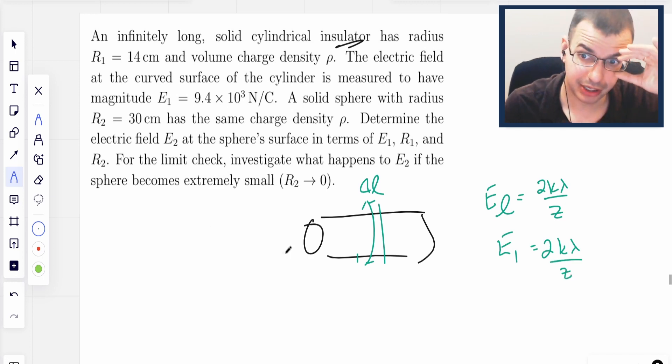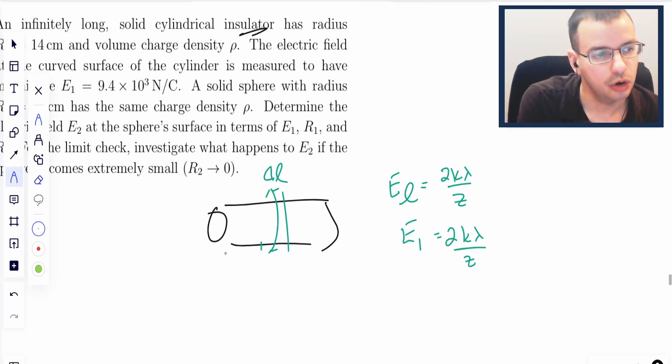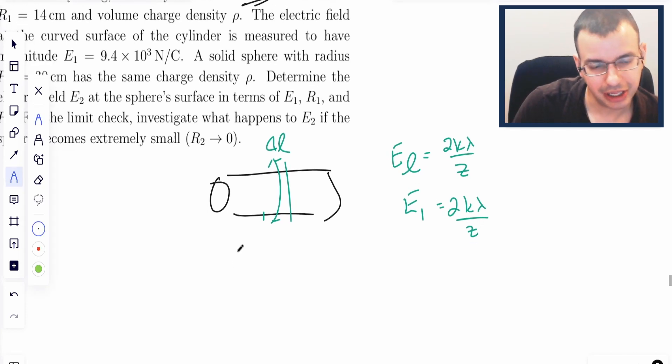The thing is we're not given a lambda, we're given a rho. We don't have a linear charge density, we have a volumetric. So I'm going to look at this little section, this little delta L.